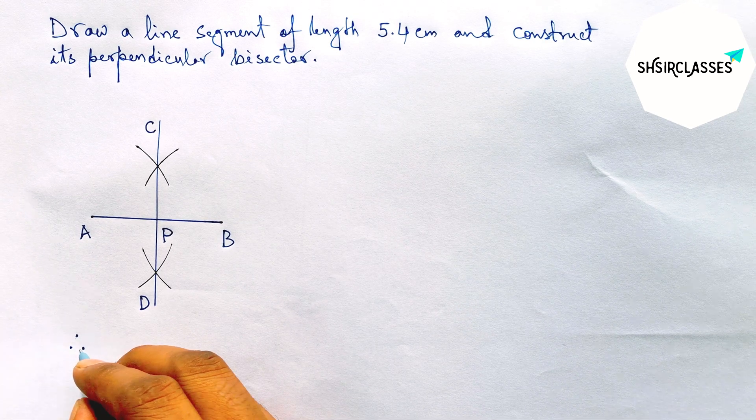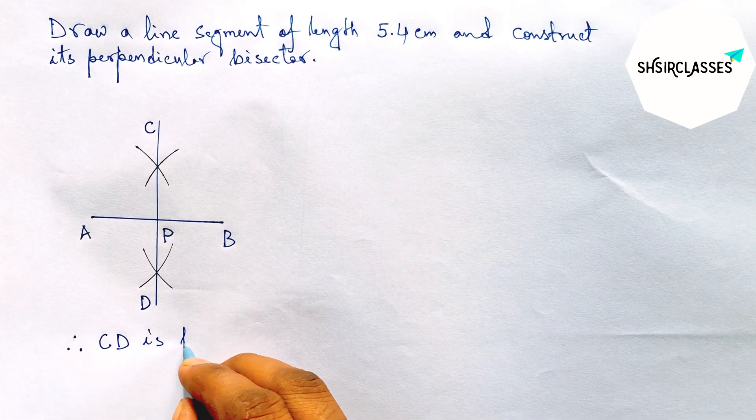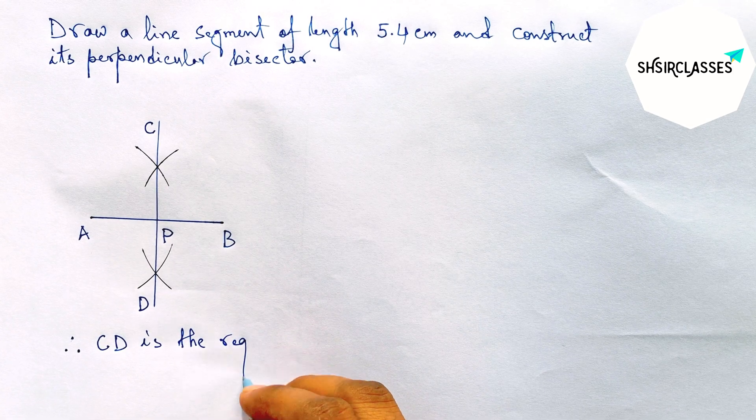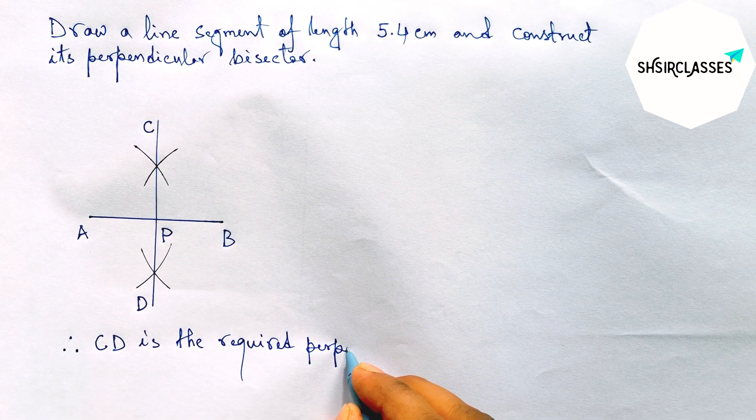Okay, therefore CD is the required perpendicular bisector to the given line AB. By this way you can construct a perpendicular bisector to a given line in easy way.